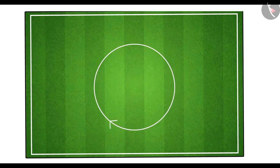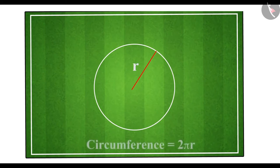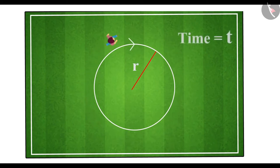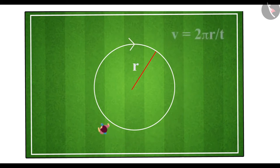Let's derive the speed of the athlete on a circular path. The circumference of a circular path with radius r is given by 2πr. If the time taken by the athlete to complete one round is t, then the speed v is given by v equals 2πr divided by t.